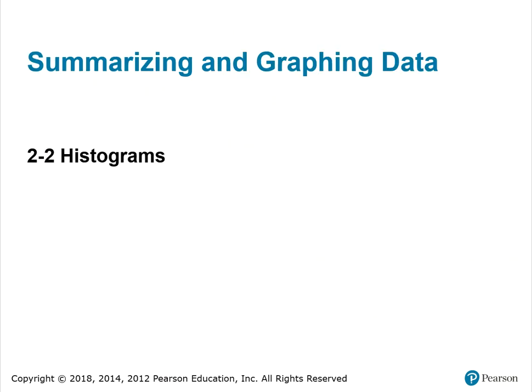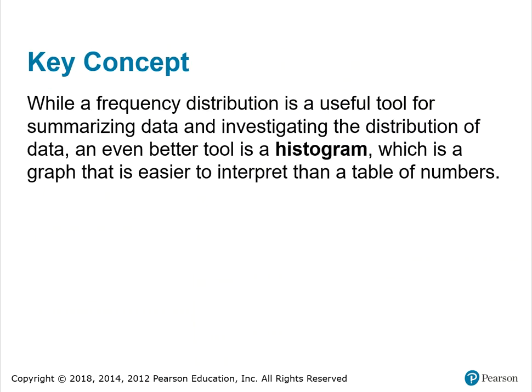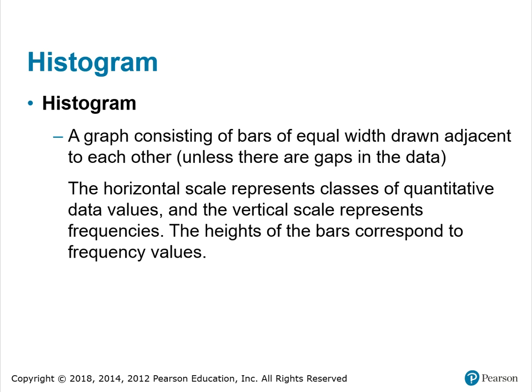Section two covers summarizing and graphing data, focusing on histograms. While a frequency distribution is a useful tool for summarizing and investigating the distribution of data, an even better tool is a histogram — a graph that is easier to interpret than a table of numbers. A histogram consists of bars of equal width drawn adjacent to each other unless there are gaps in the data. The horizontal scale represents classes of quantitative data values, the vertical scale represents frequencies, and the heights of the bars correspond to frequency values.